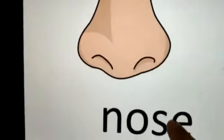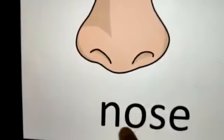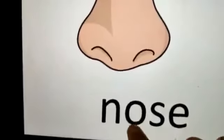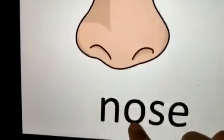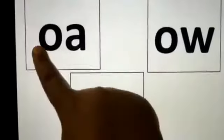There's one more. Nose. With magic-E. Remember? The magic-E is doing the magic. N-O-S — it's not a short O because this has magic-E. So this makes the name sound. So N-O-S-E. Nose. So we have three long O sounds: O-A is also O, and O-W is also O.